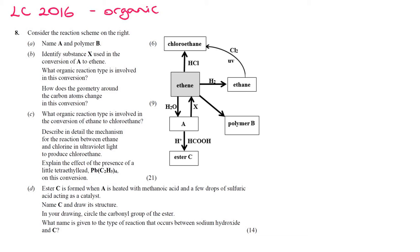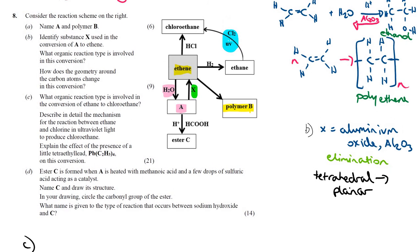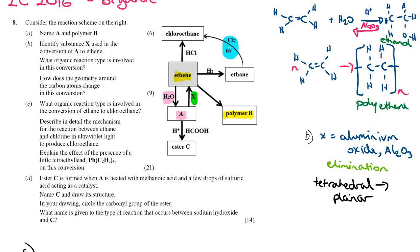In this video, I'm going to go through a Leaving Cert past paper question on organic chemistry. It's 2016, question 8. I'm going from ethane to chloroethane, that's a substitution reaction, a free radical substitution.